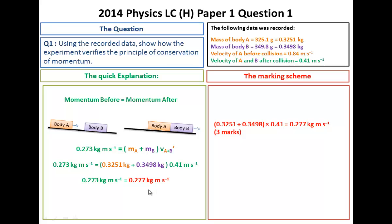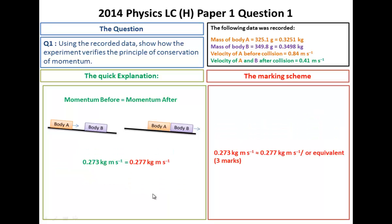But for the next bit, they say how does this make it a conservation? Conservation is before equals after. You can see before it's 0.273, after it's 0.27, which is sort of, you know, the same. It's within experimental error. So there are little things that affect the experiment such as the slope might not be exactly level, there's friction, air resistance, etc. But that's within reasonable values.